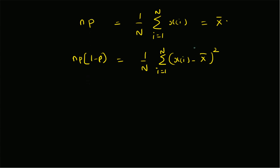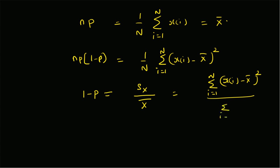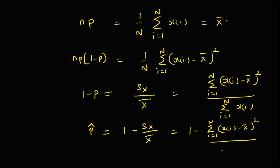From these two equations, by substituting n*p = x-bar into the variance equation, we can clearly see that (1-p) equals the sample variance divided by the sample mean — that is, the sum of squared deviations divided by the sum of the values. Therefore, the estimate p-hat is given by 1 minus (sample variance / sample mean).